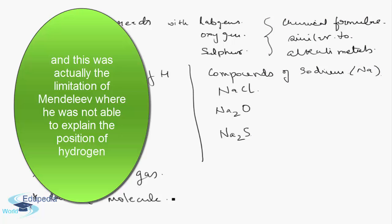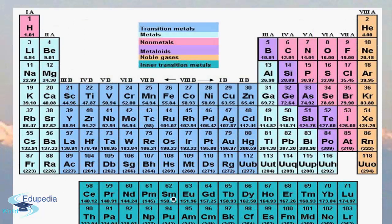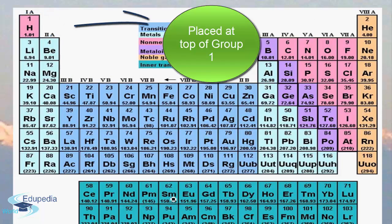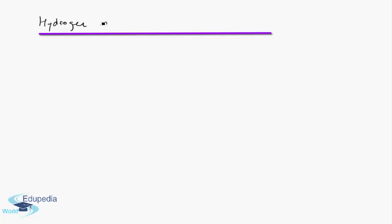This dual resemblance was actually the limitation of Mendeleev — he was not able to explain the position of hydrogen clearly. In the modern periodic table, hydrogen is the first element and is placed at the top of Group 1. Let's now discuss the reasons why hydrogen is placed in Group 1.